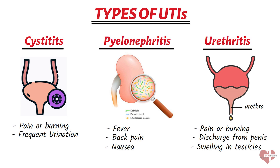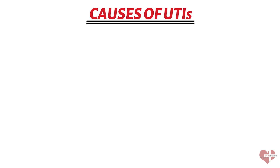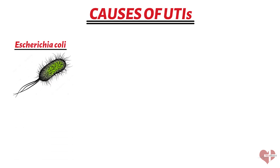Urinary tract infections are caused by bacteria that enter the urinary tract and multiply, causing infections. The most common bacteria that cause UTIs is Escherichia coli, also called E. coli. This is the most common bacteria that causes UTIs, accounting for about 80-90% of cases. E. coli is a type of bacteria that normally lives in the intestines, but it can cause an infection if it enters the urinary tract.